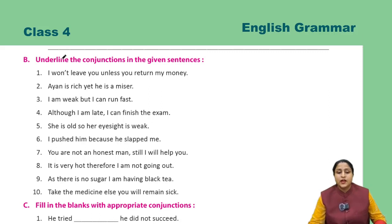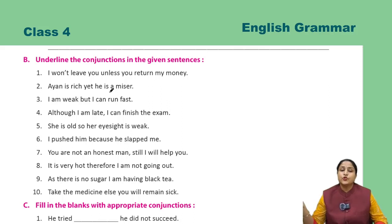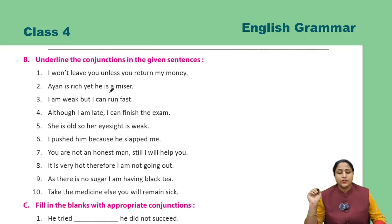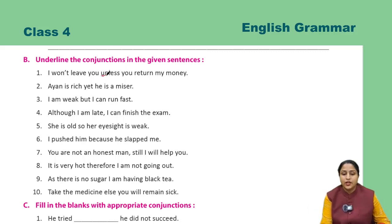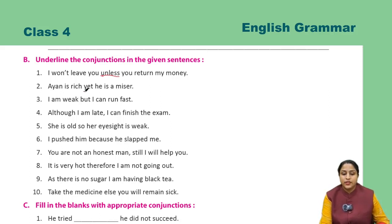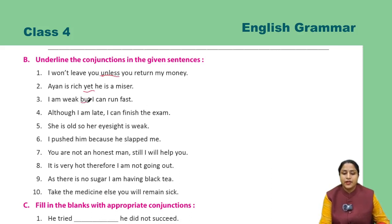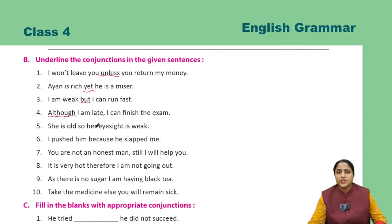Now, exercise B: Underline the conjunctions in the given sentences. Niche sentences given hain — ismein jo bhi conjunction hai usko aap underline karenge. First sentence — conjunction kya hai? Unless. Second sentence: Ayan is rich, yet he is a miser — conjunction: 'yet'. Next: I am weak but I can run fast — conjunction: 'but'. Ishi tarah se iske baaki ke parts aap khud karenge.